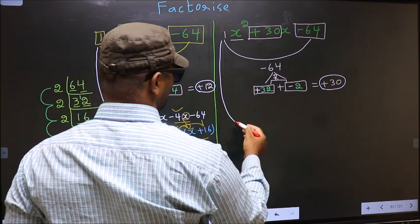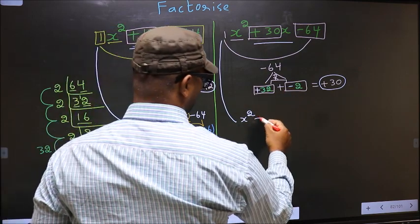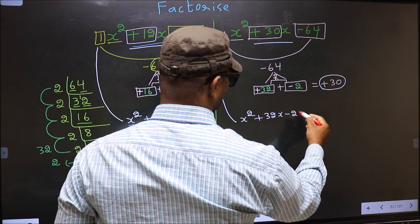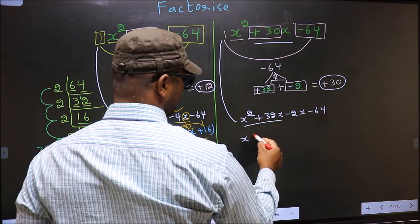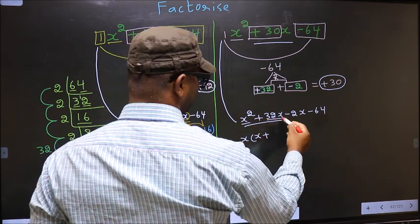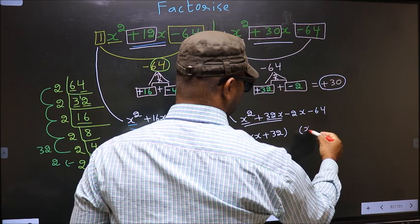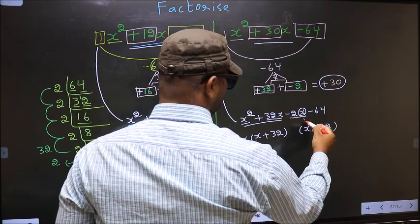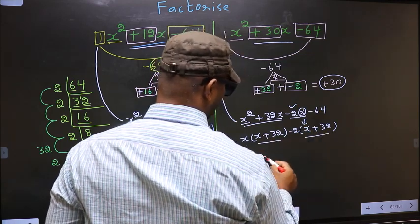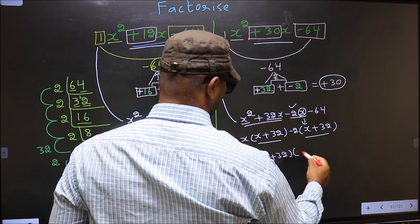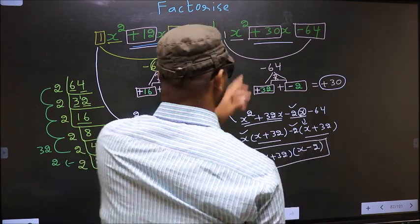Now for the second expression, change it to x squared, and in place of plus 30x write plus 32x minus 2x, minus 64. From the first two terms take out common factor x, so you get x(x plus 32). From the last two terms, x has gone inside, so outside you get minus 2, giving minus 2(x plus 32). Now take out x plus 32 common, so you get (x plus 32)(x minus 2). This is the answer for the second expression.